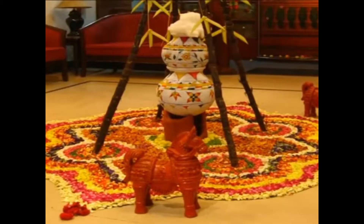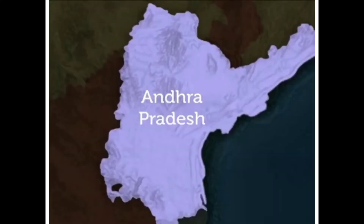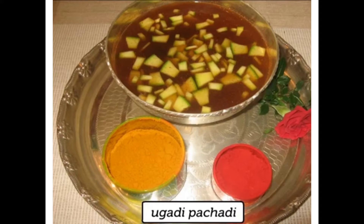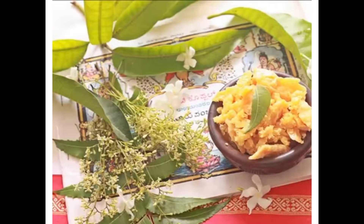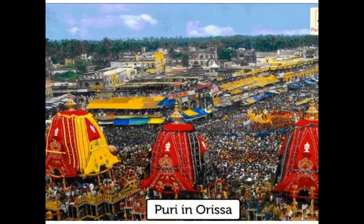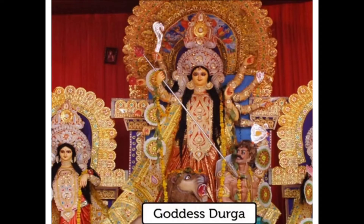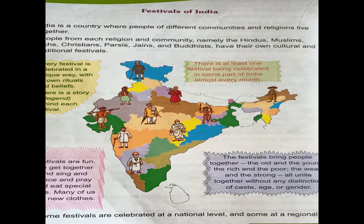In Tamil Nadu, Pongal is the harvest festival. In Andhra Pradesh, Yugadi Pachadi is the New Year festival — people eat Bevu Bella, neem leaves and jaggery, and do puja for the Panchanga. In Odisha, the famous Jagannath Mandir in Puri holds special rath yatra puja. In West Bengal, people celebrate Durga Puja, offering prayers to Goddess Durga.